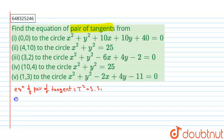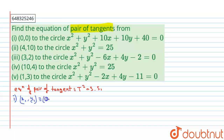For the first part, the tangents are drawn from the origin, so x₁, y₁ is (0, 0). Therefore, T² = SS₁ becomes: (x·0 + y·0 + ...)².